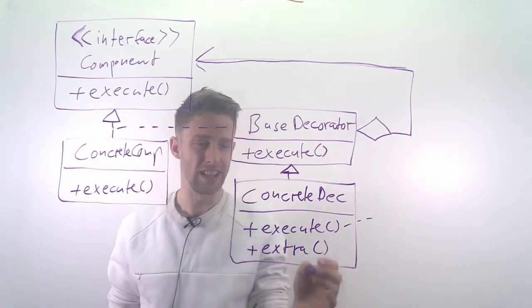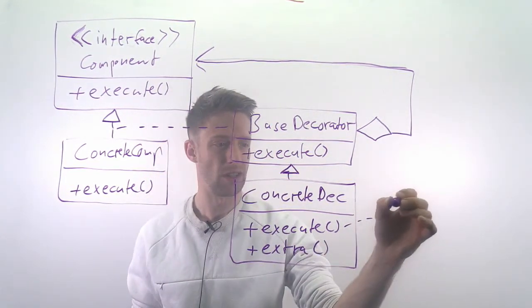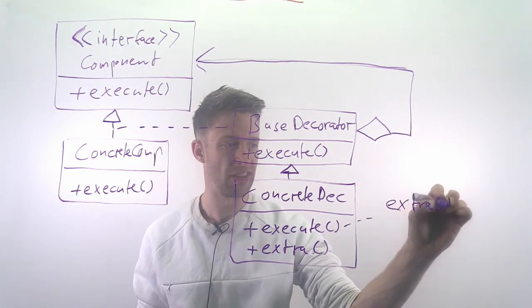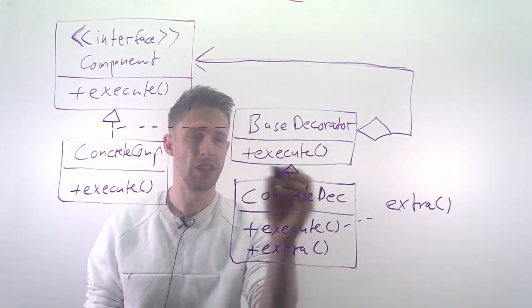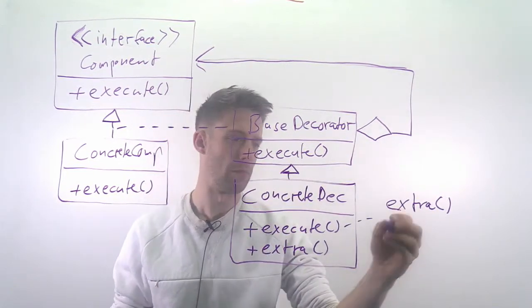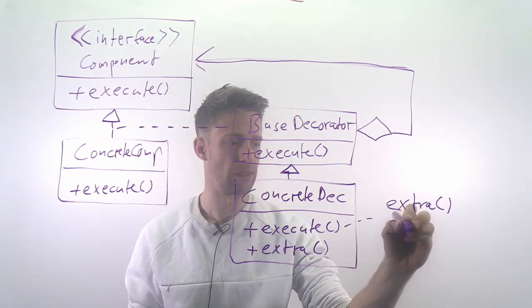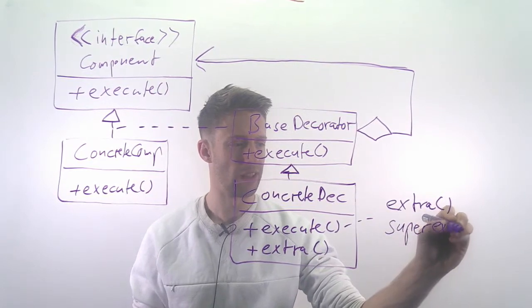The way this would look like is that you would probably call your extra functionality—so for example, our buffering or our encryption—and then you would call the original execute method. In many programming languages that's done with the super.execute method.